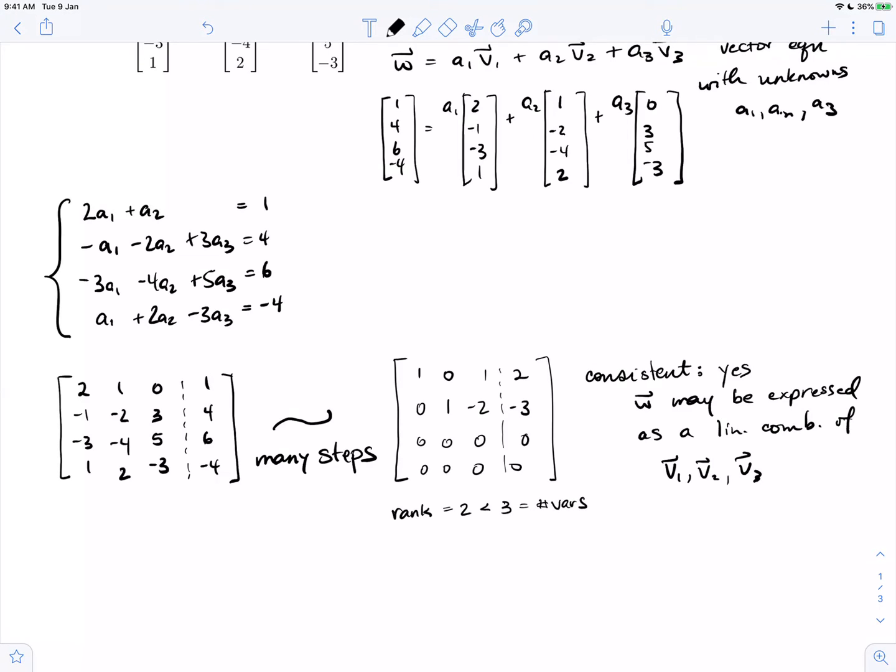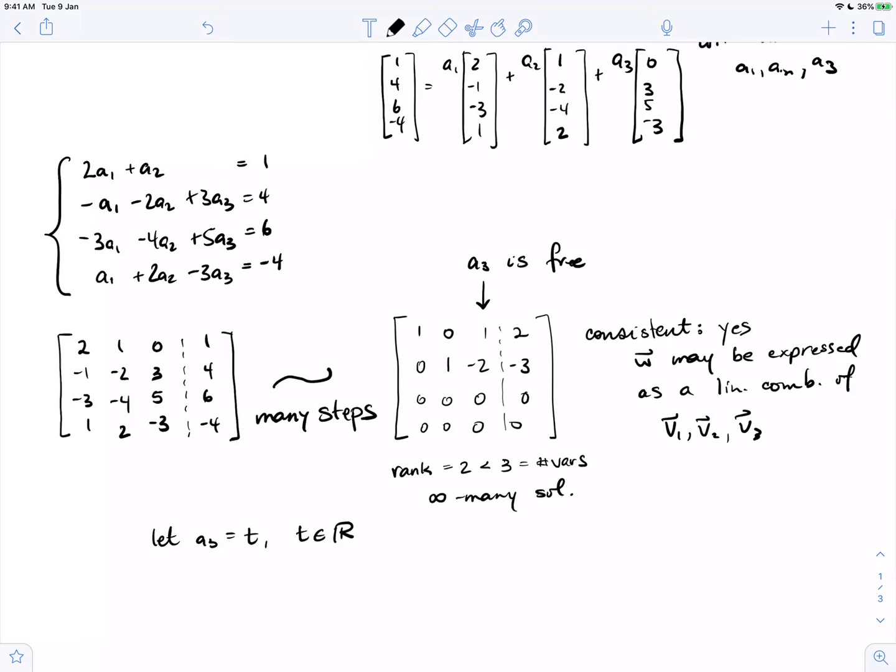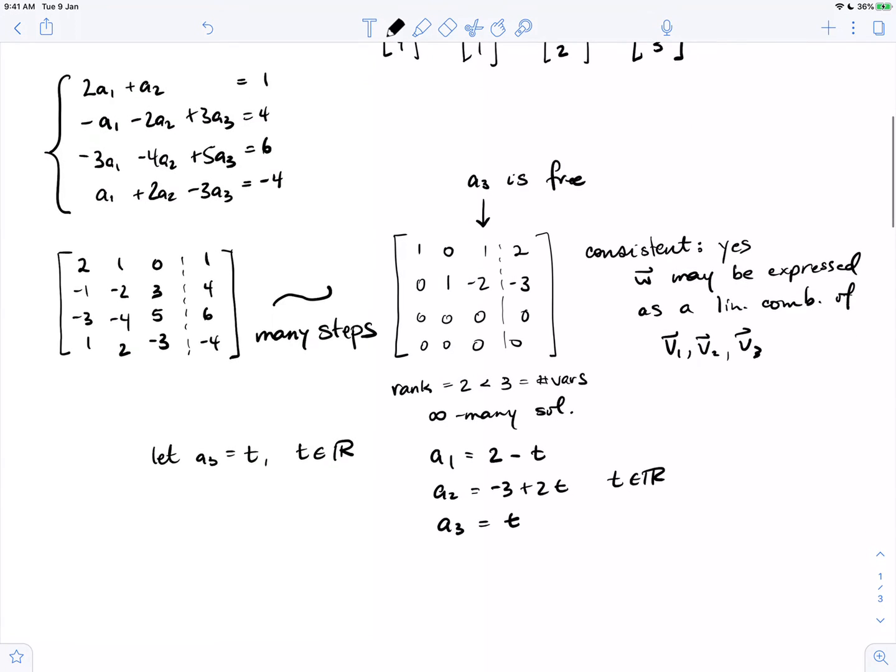Another way of seeing this is that variable a3 is free. Let a3 equal t for some t in R. We can express the other variables in terms of this. a1 is going to be 2 minus t, a2 is minus 3 plus 2t, and a3 is t.